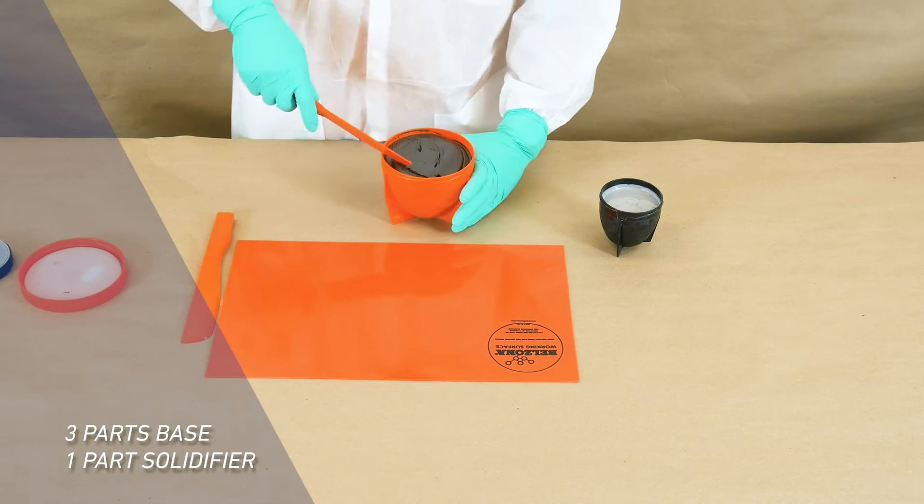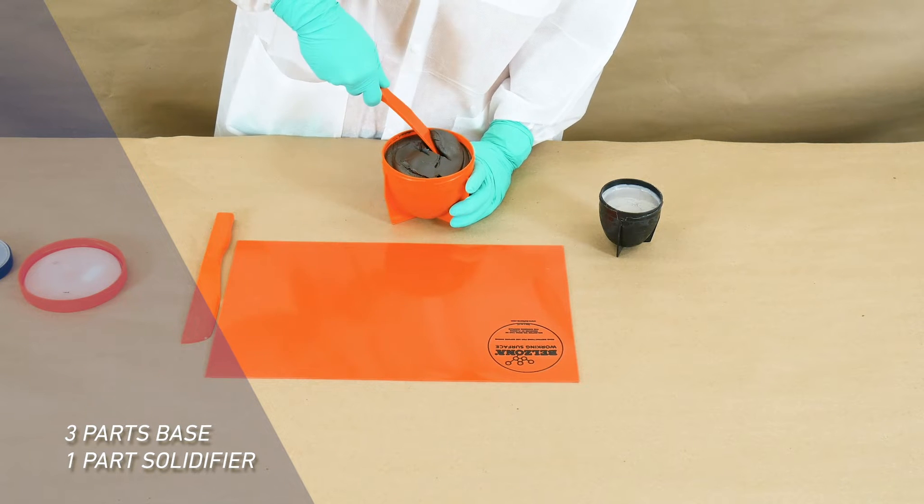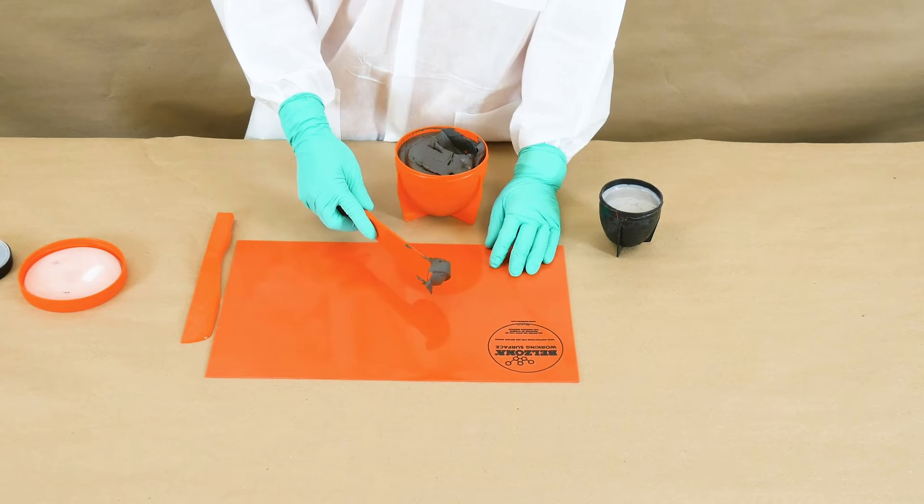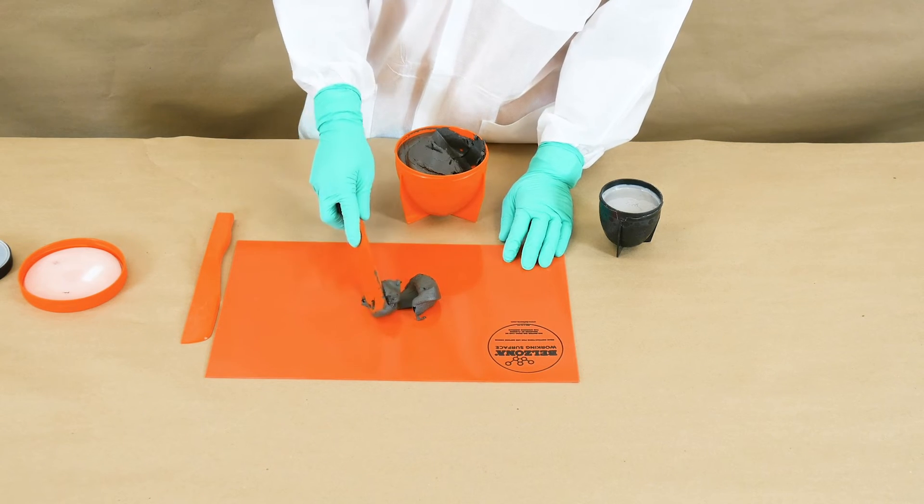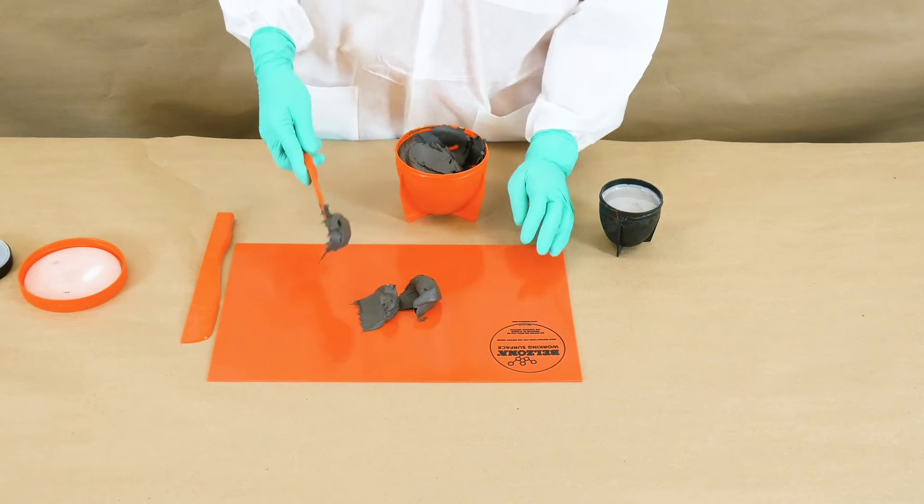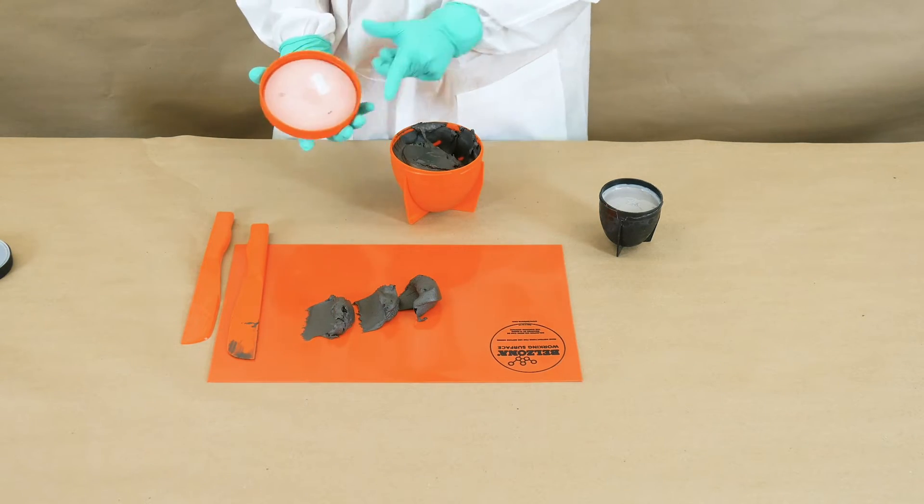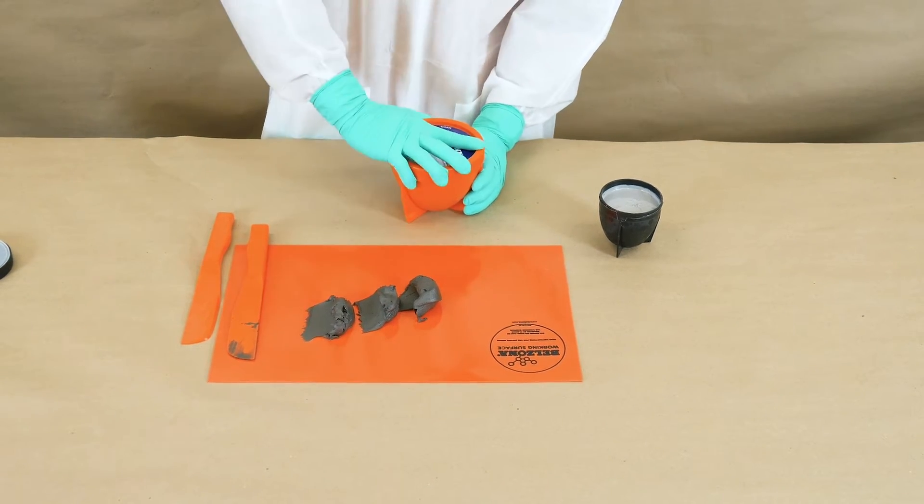Measure three separate parts of Belzona 1111 base and transfer them to the working surface. Place the seal and cap back onto the container to store for further use.